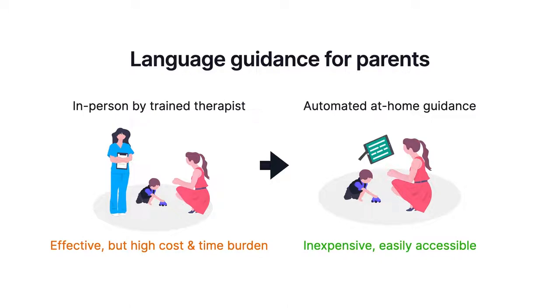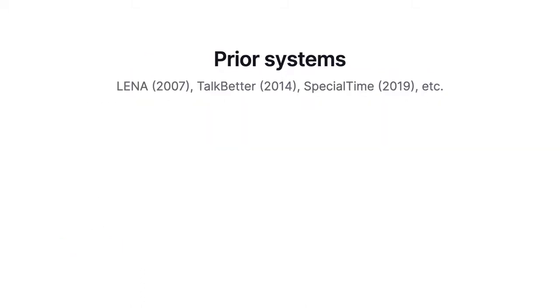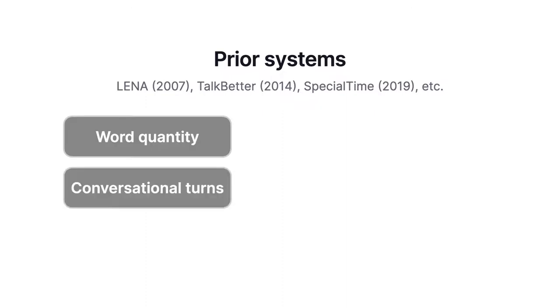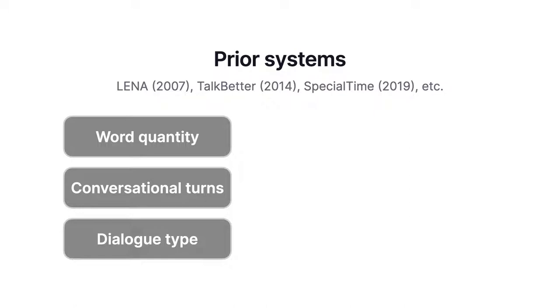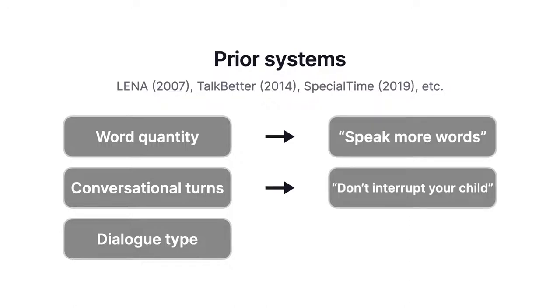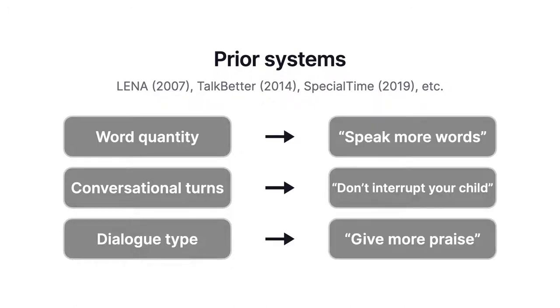There have been a few recent works that have explored guidance technology for caregivers. These systems analyze speech signals to track parent word count, conversational turns, and dialogue sentiment — to provide feedback such as "speak more words," "don't interrupt your child," or "give more praise."